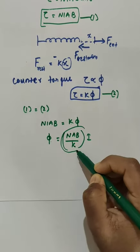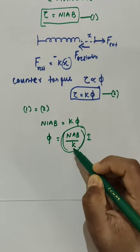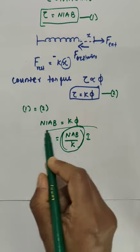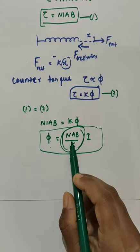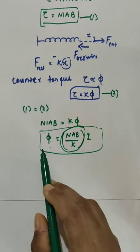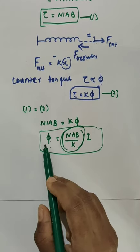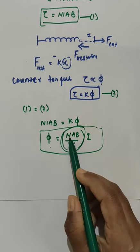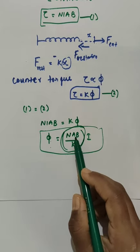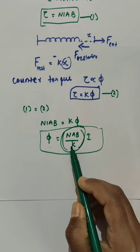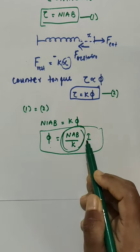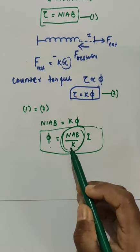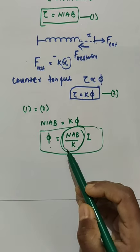The quantity NAB divided by K is actually a constant for a given galvanometer. In this expression, phi is the angular deflection, N is the number of turns of the coil, A is the area of the coil, B is the magnetic field, K is the torsional constant — which is the restoring torque per unit twist — and I is the current. So NAB by K is a constant for a given galvanometer.